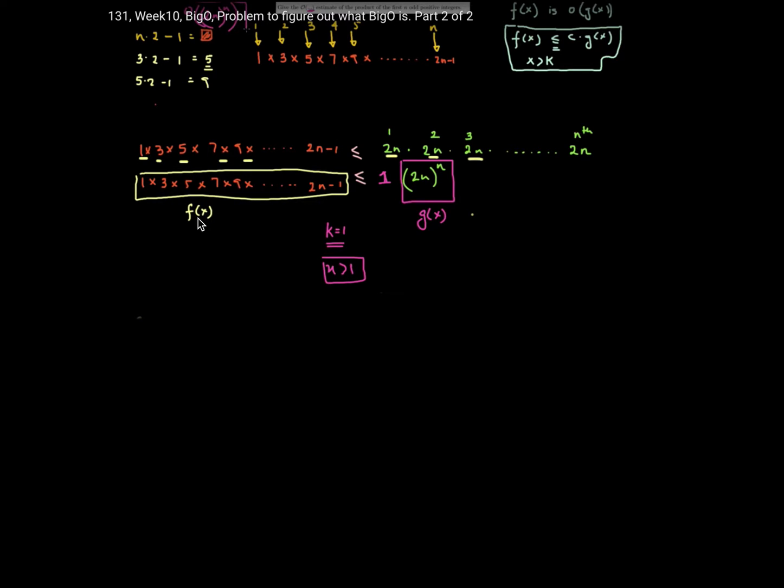If you recollect from the last video, we were able to provide one such upper bound which was 2n to the power n. Now this is an upper bound but it does not happen to be one of the tighter upper bounds. There is some other bound that is much tighter than 2n to the power n.